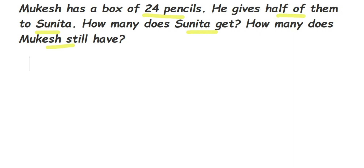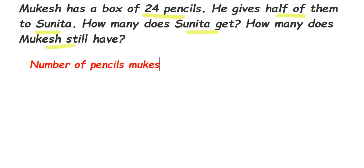Here they have given the number of pencils Mukesh has. So, the number of pencils Mukesh has is equal to 24. From here, he gave half of them. Half means we have to divide that by two. So, if we divide by two, we are equally dividing into two parts — half will Mukesh get and half will Sunita get.